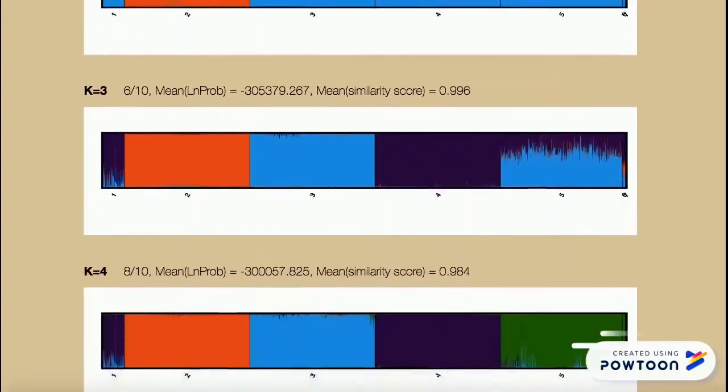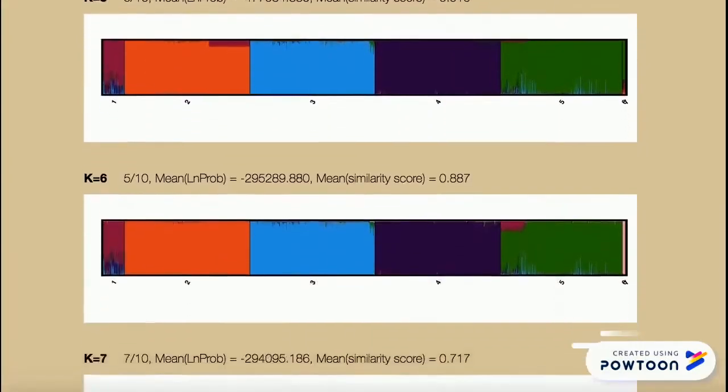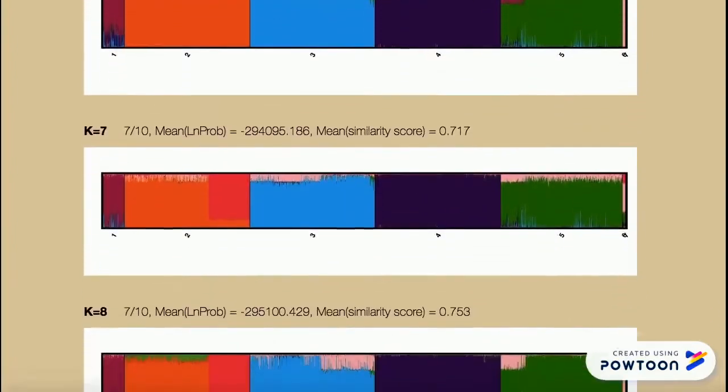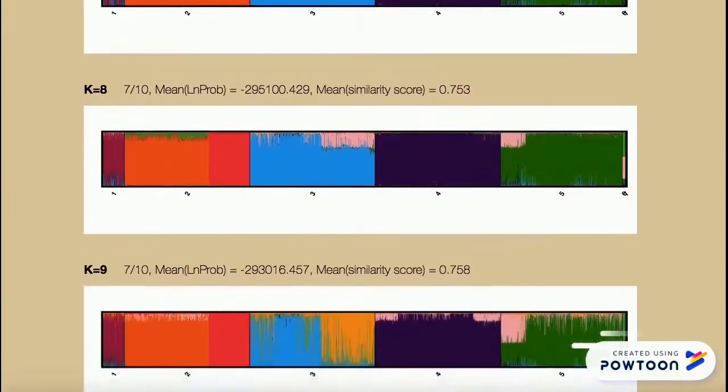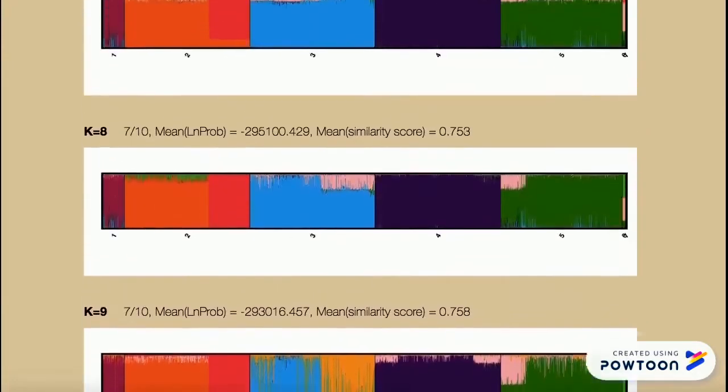We also use structure to calculate the genetic contribution to each individual in a population from K ancestor or root subpopulations, which are characterized by being in Hardy-Weinberg equilibrium and linkage equilibrium. It therefore helps to reveal population structure.